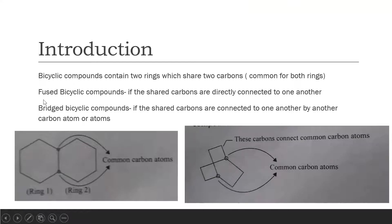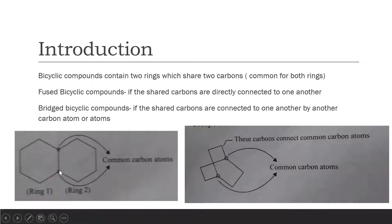Bicyclic compounds are of two kinds: fused bicyclic compounds and bridged bicyclic compounds. In fused bicyclic compounds, the shared carbons are directly connected to each other by a single bond. But in a bridged bicyclic compound, the shared carbons are connected to one another by other carbon atoms, as seen in the second example. In the first picture, the two darkened spots are the common carbon atoms shared by both rings.